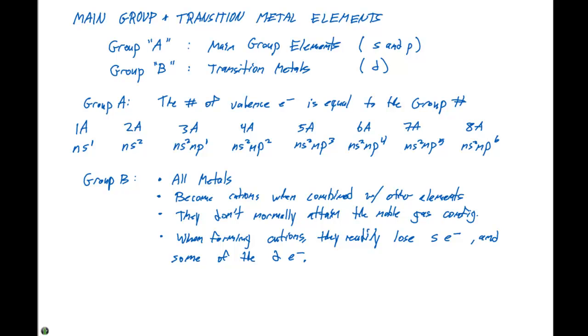So, for example, if we have iron, it has an electron configuration of argon, 4S2, 3D6.